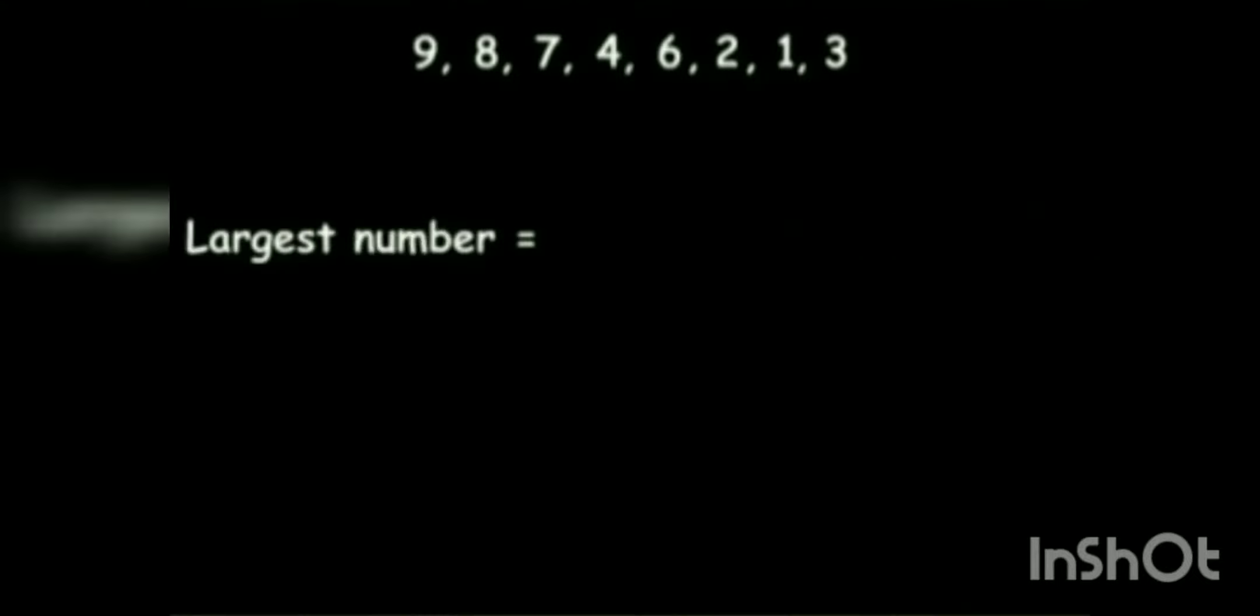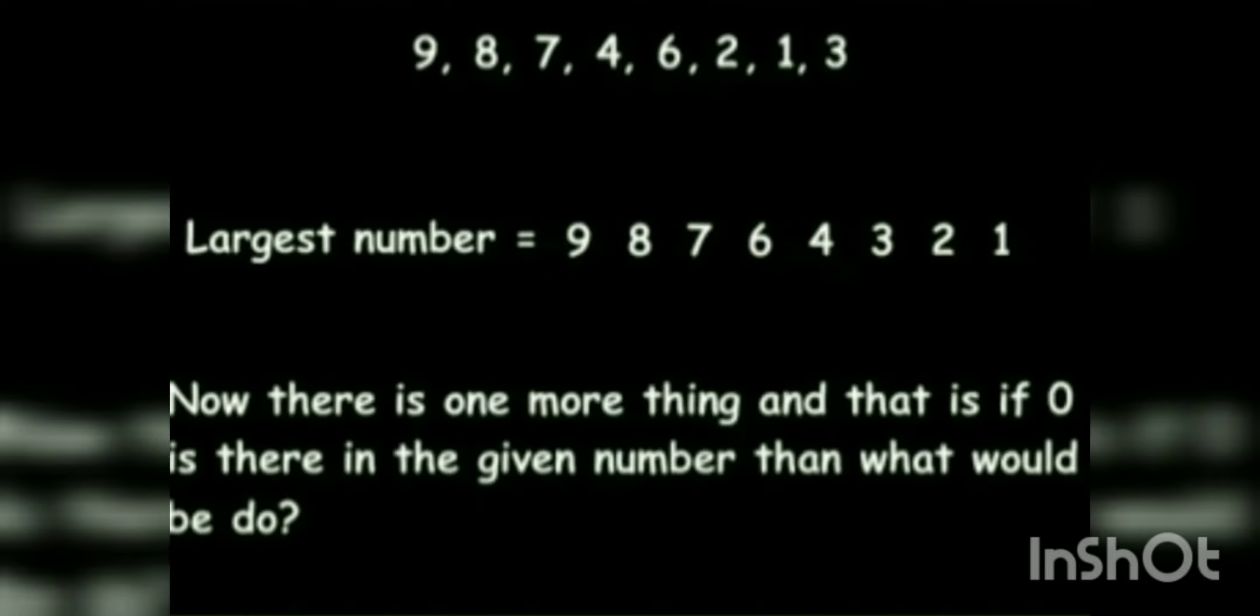And for the largest number, we arrange the digits in descending order: 9, 8, 7, 6, 4, 3, 2, 1. This, we can make the numbers from the digits.